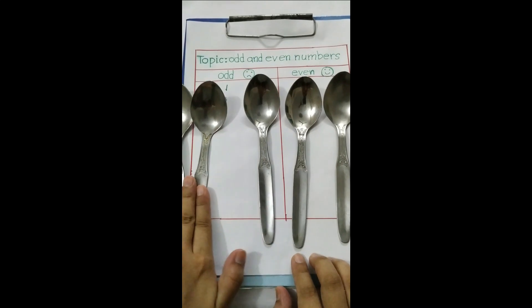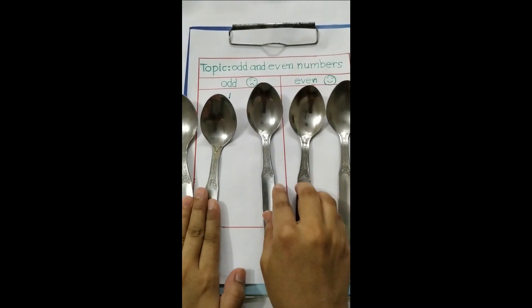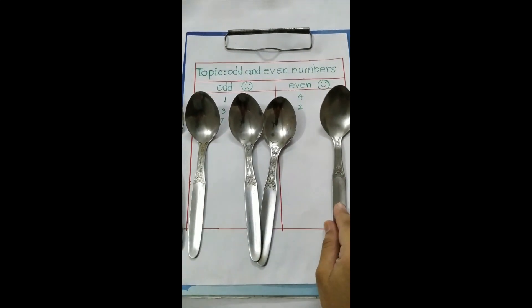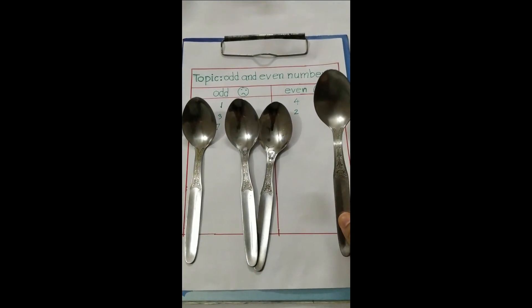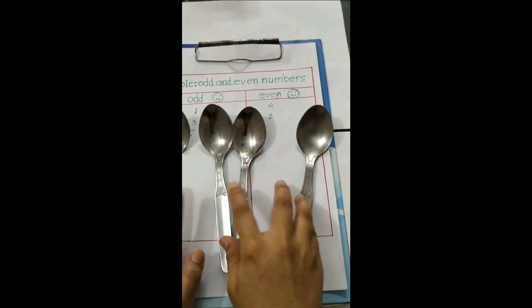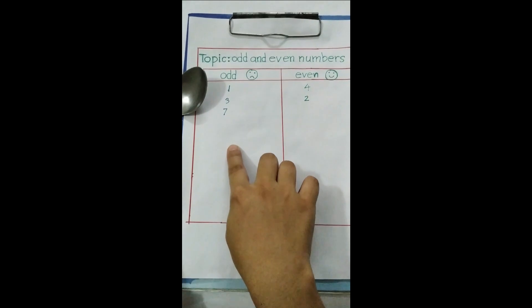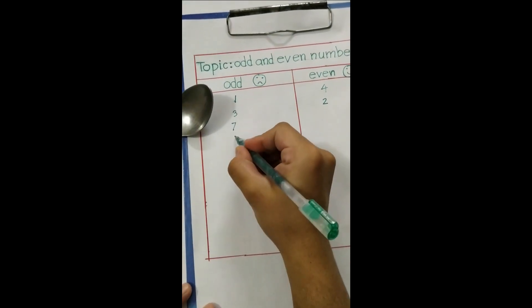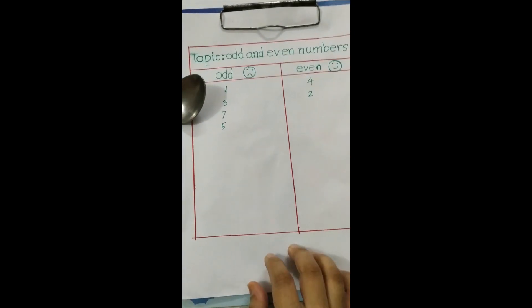These two spoons form a pair. These two spoons form a pair. And oh, this spoon is all alone, still looking for a friend. That means it's five. Five is odd, so we can write here five.